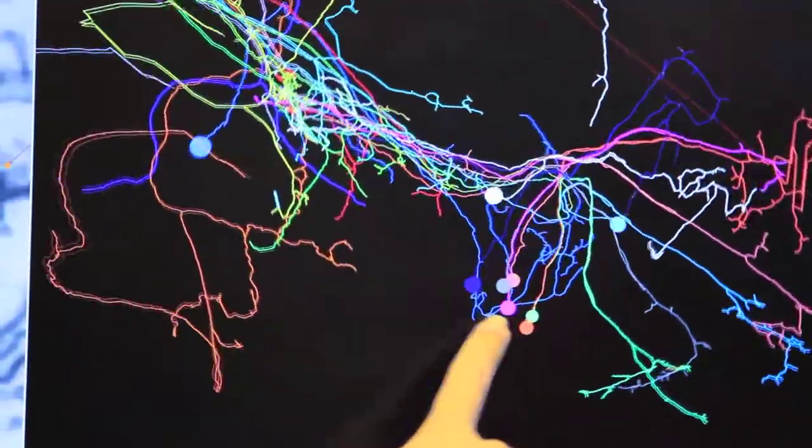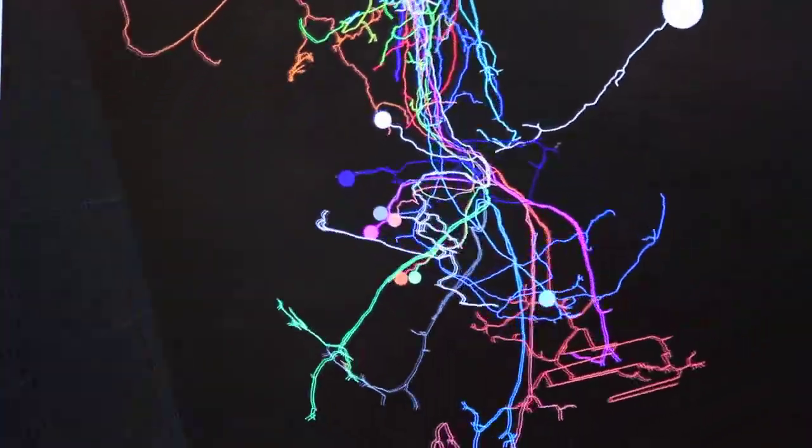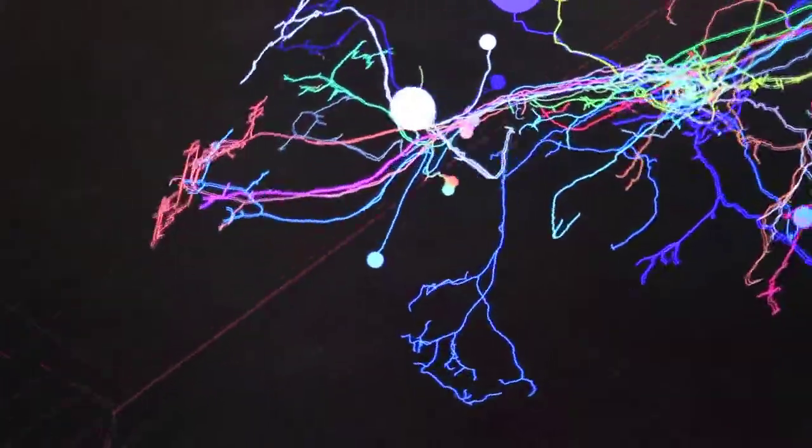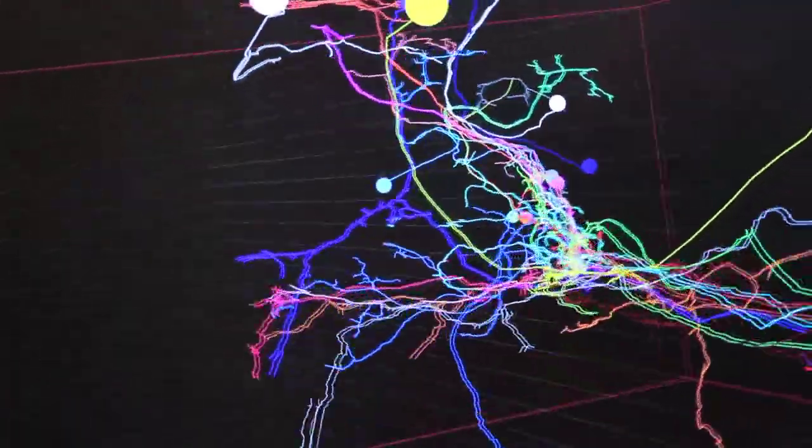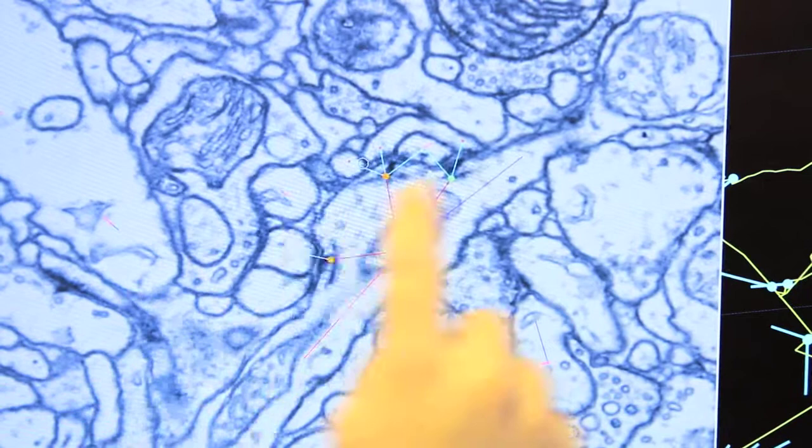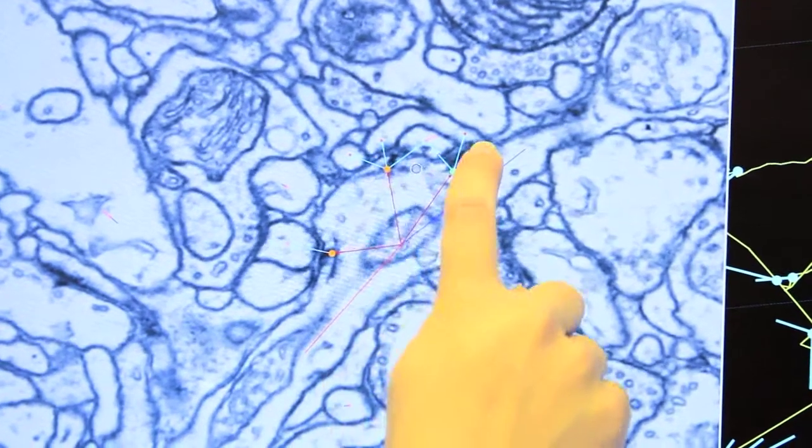This very small bottleneck population encodes all of the sensory processing that the brain has done. And somewhere in this code must be the message to the motor centers of the fly for what action to perform.